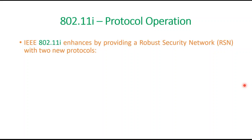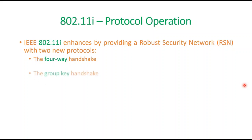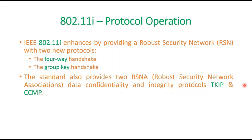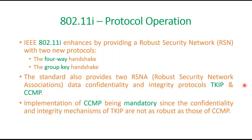802.11i enhances security by providing a Robust Security Network (RSN) with two new protocols: the 4-Way Handshake and the Group Key Handshake. The standard also provides two RSNA data confidentiality and integrity protocols: TKIP and CCMP. Implementation of CCMP is mandatory since the confidentiality and integrity mechanisms of TKIP are not as robust as those of CCMP.